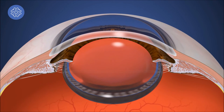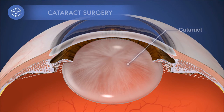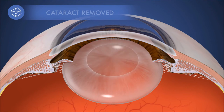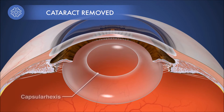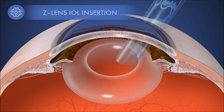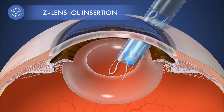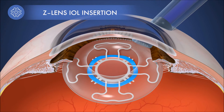When the natural lens becomes cloudy because of age, cataract surgery is required. During surgery, a hole is made in the capsular bag, called a capsulorhexis, and the natural lens is removed through it. The Z-lens is then inserted into the now-empty capsular bag, with the restraining device holding it flat.